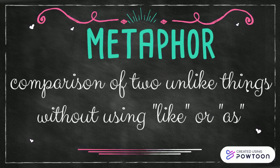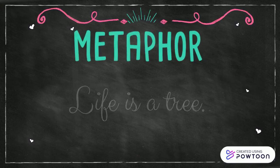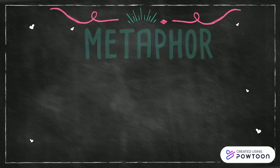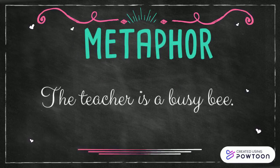On the other hand, metaphor is a comparison of two unlike things without the use of 'like' or 'as.' For example: life is a tree — life is being directly compared to a tree without using 'like' or 'as.' Next example: the teacher is a busy bee — the teacher is being compared directly to a busy bee without the use of 'like' or 'as.'